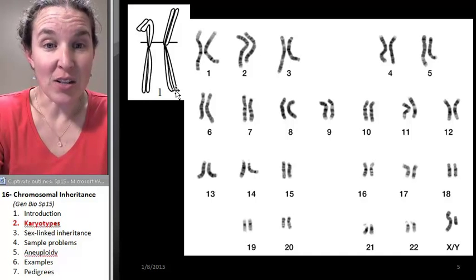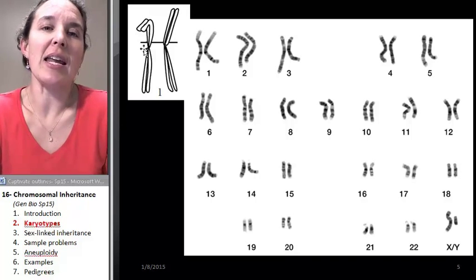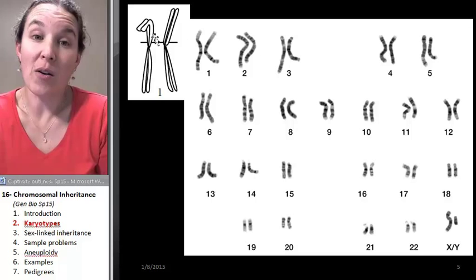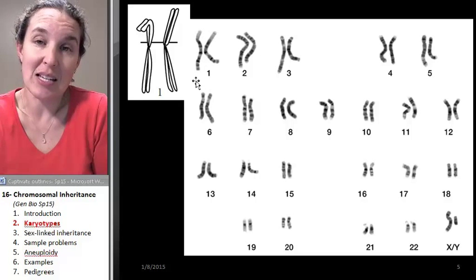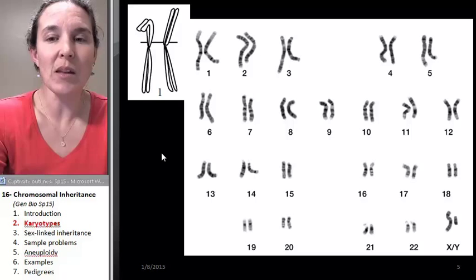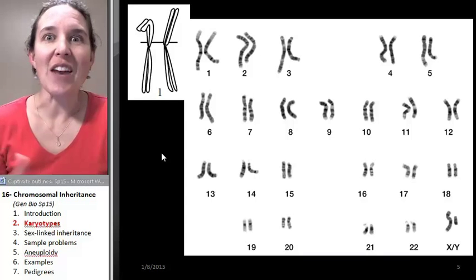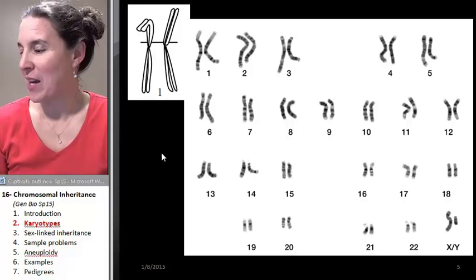But look, there are sister chromatids. They're just super squished together so you can't really see them. See, these actually are sister chromatids. This is just an image or an example of how there are sister chromatids in this mess right here.